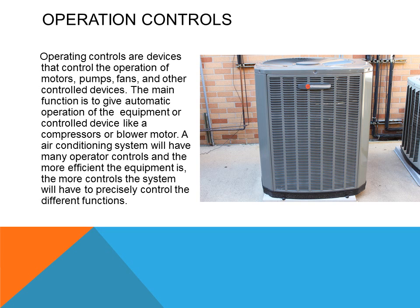Operating controls are devices that control the operation of motors, pumps, fans, and other control devices. The main function is to give automatic operation of the equipment or control device like a compressor or blower motor. The more efficient the equipment is, the more controls the system will have. A heat pump has many more controls than a standard air conditioning system because it has different devices such as reversing valves, outdoor thermostats, and other controls.